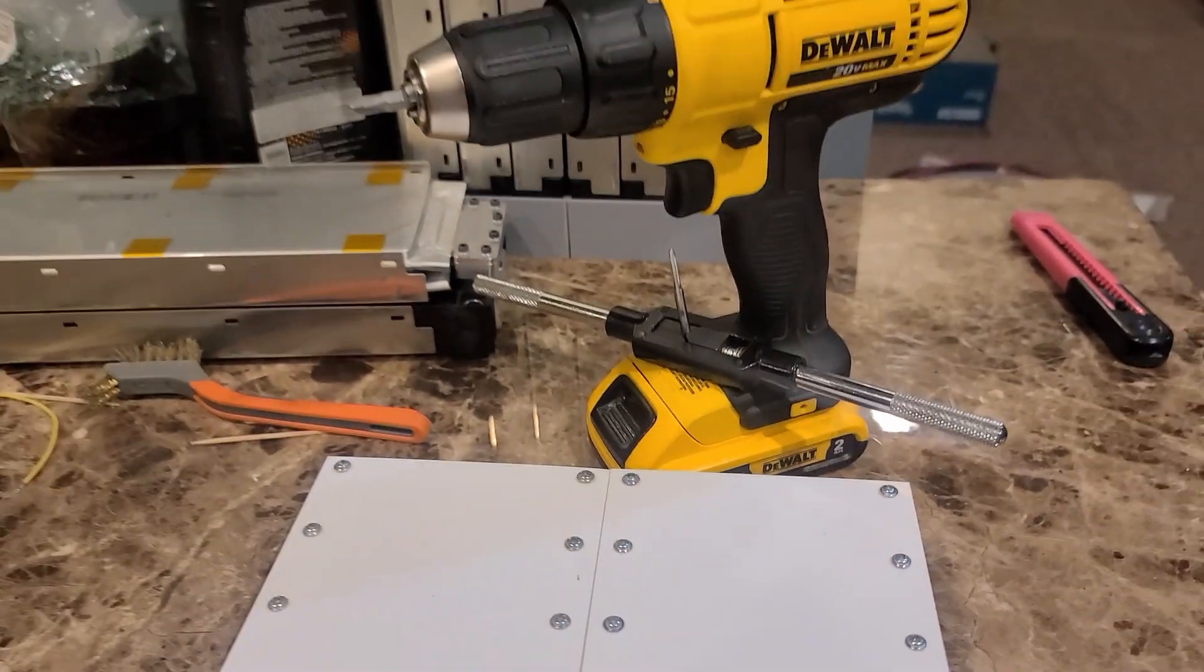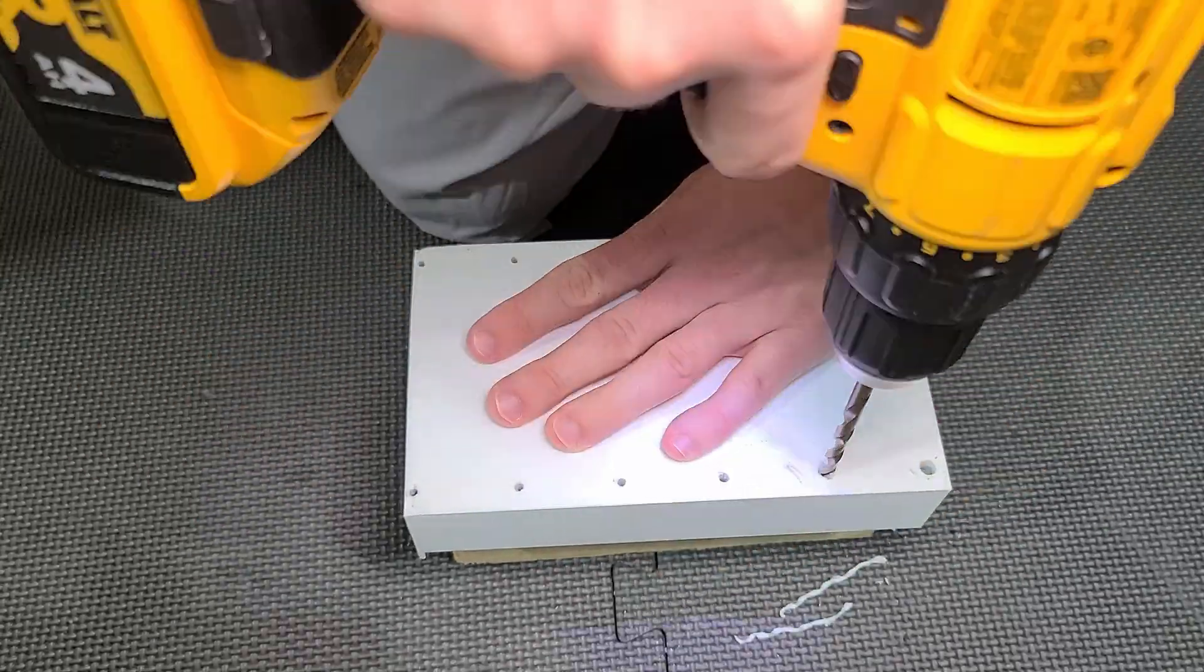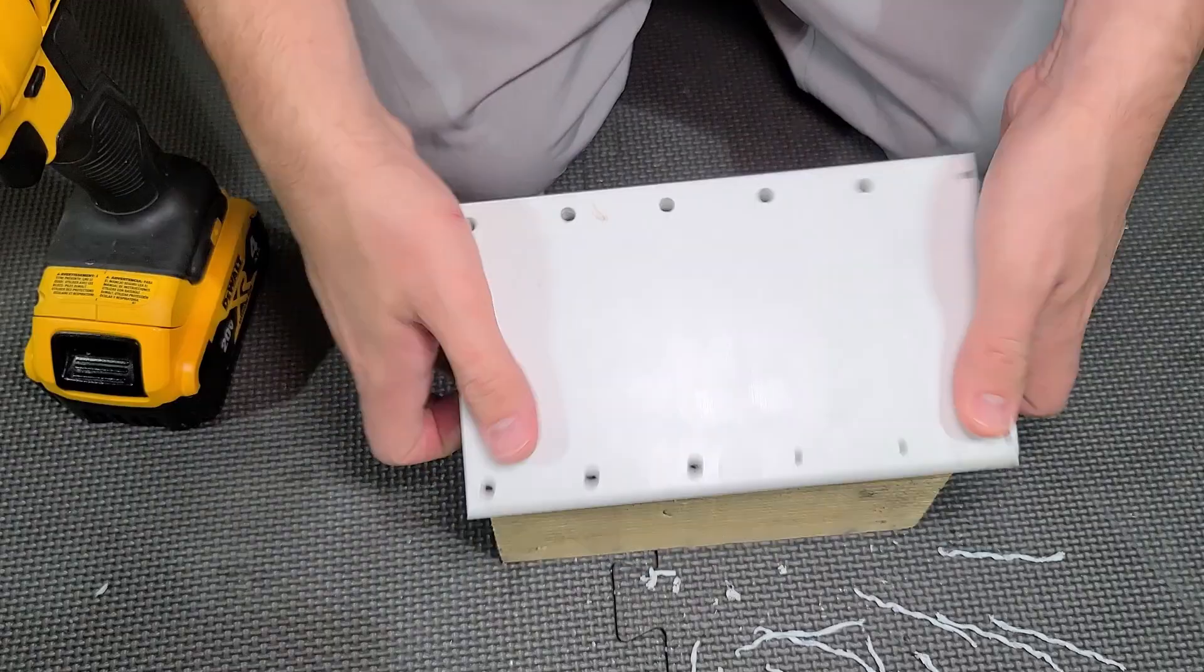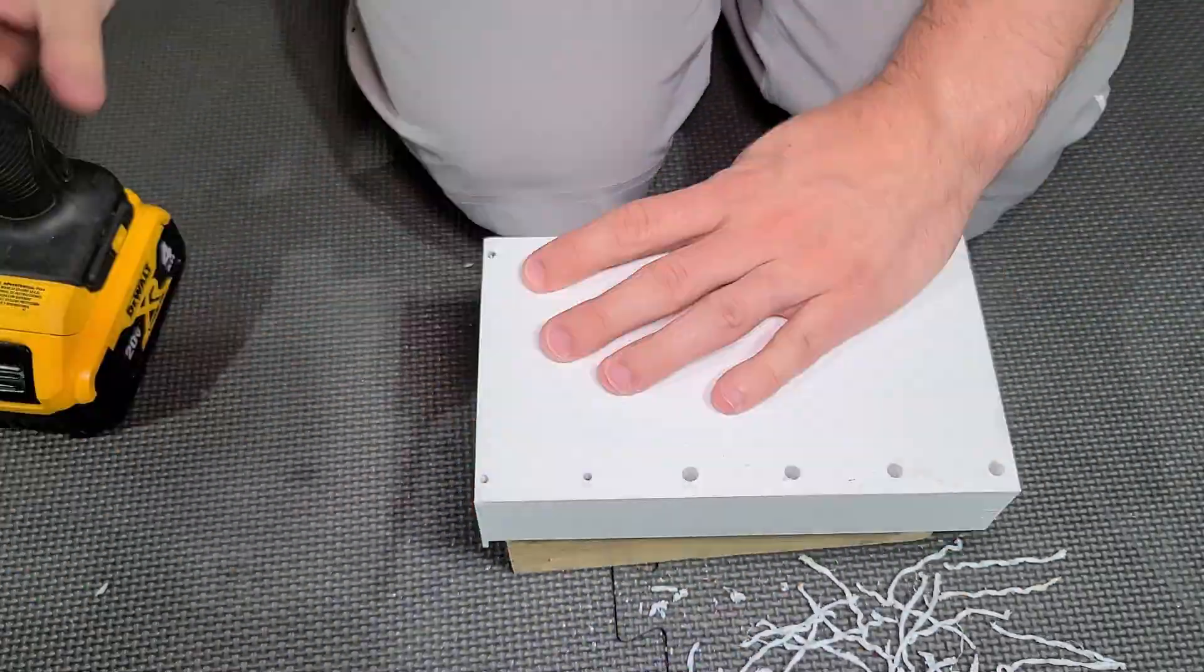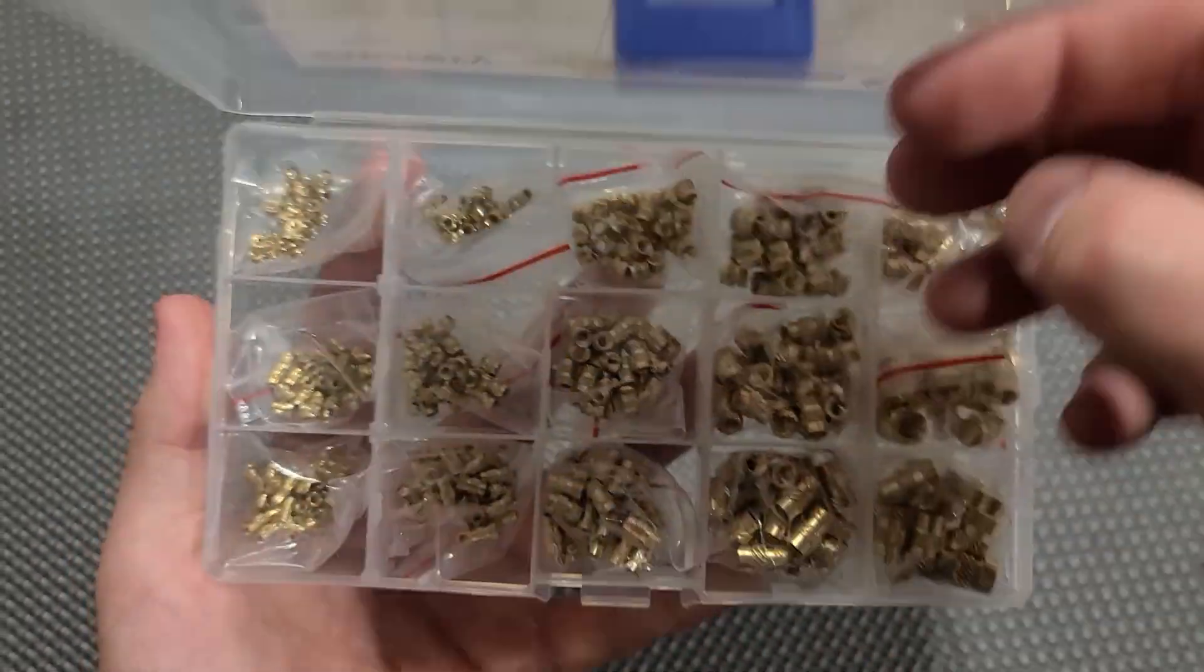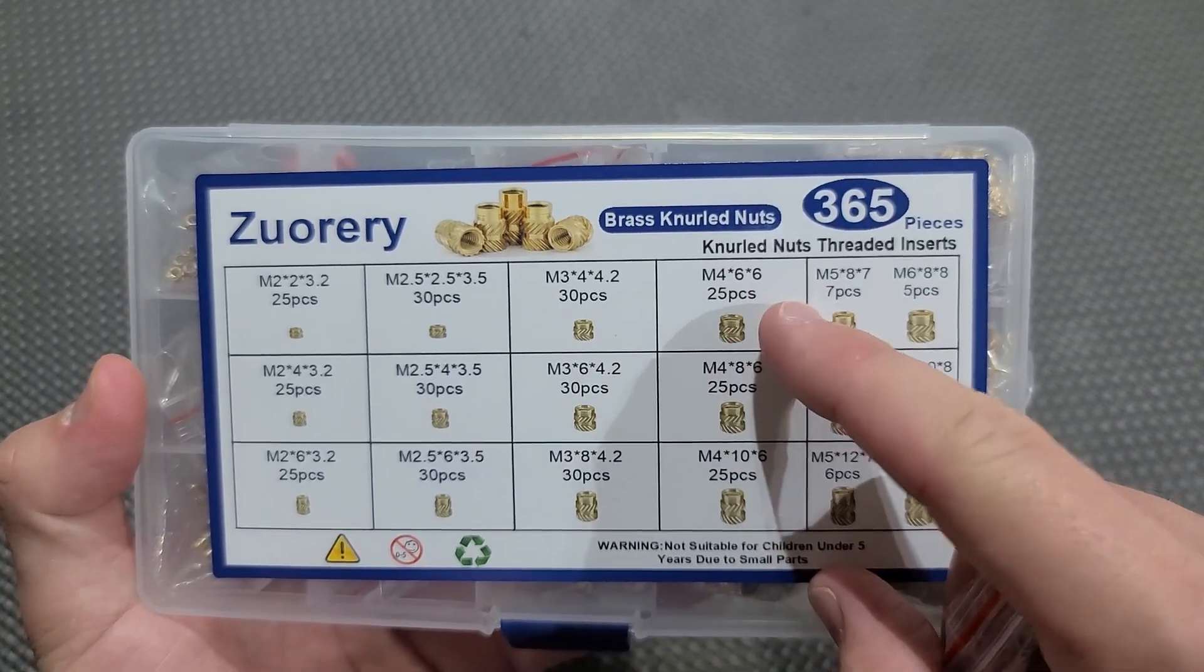But before you know it, I decided to make a change of plans. After tapping all 24 holes, I ended up deciding to upgrade my M3 screws to M4 screws. But the difference this time is I wasn't going to thread out the plastic. I ended up buying some metal heated inserts. So I decided to go with the M4 threaded inserts with a depth of 6 millimeters.